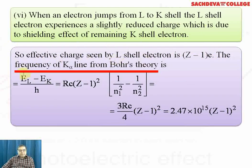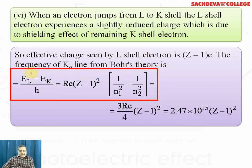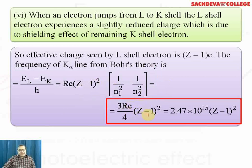The frequency of K alpha line from Bohr's theory is (E_L - E_K)/h. Here E_L means energy in L shell, E_K means energy in K shell divided by h equals Rc(Z-1)² times (1/n₁² - 1/n₂²). This is evaluated as (3Rc/4)(Z-1)², where c is velocity of light, R is Rydberg constant, and Z is atomic number.